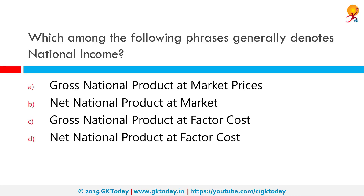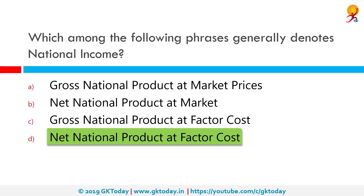Which among the following phrases generally denotes national income? The correct answer is net national product at factor cost. This is the market value of output from which we deduct the indirect taxes, thus arriving at net national income at factor cost.